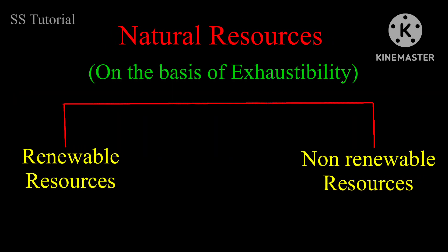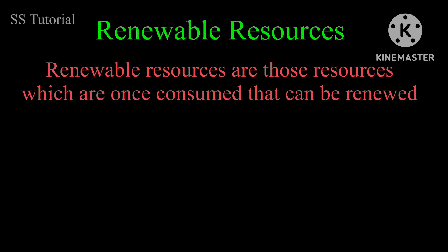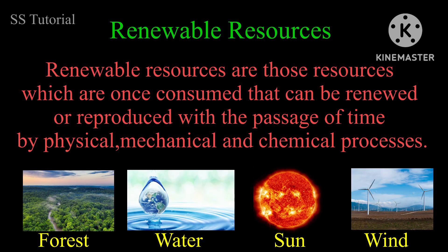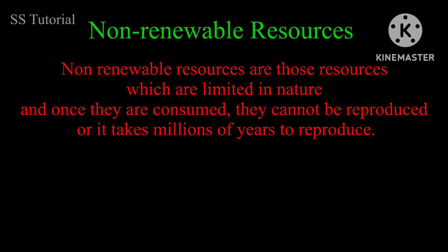On the basis of exhaustibility and renewability, resources are classified into two types: renewable and non-renewable resources. Resources which, once consumed, can be renewed or reproduced over time through physical, mechanical, and chemical processes are called renewable resources — for example, air and water. However, misuse and overuse of these resources can limit their available quantity. Non-renewable resources are those which are limited in nature and once consumed cannot be reproduced, or take millions of years to reproduce.